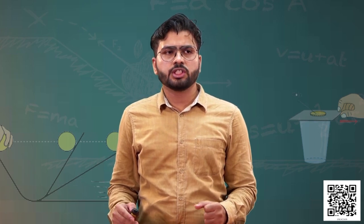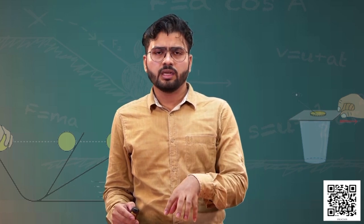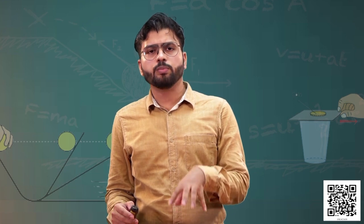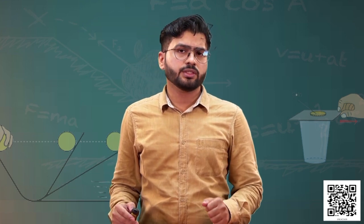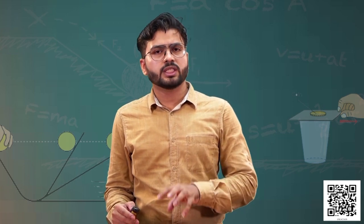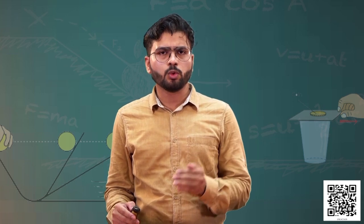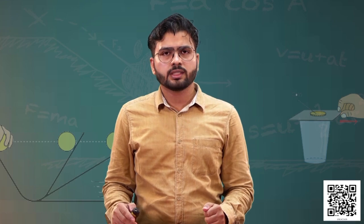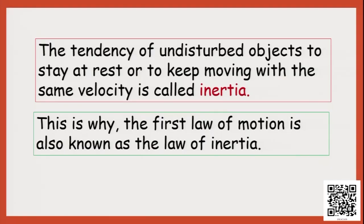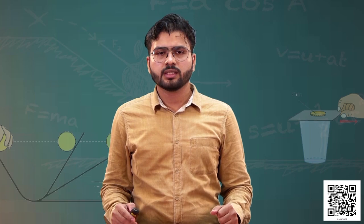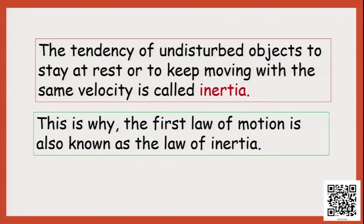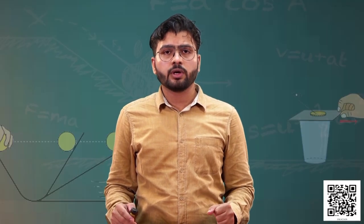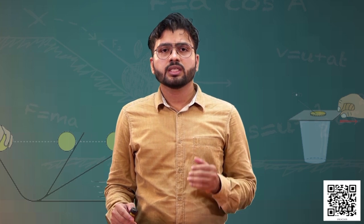The object will always try to resist the change in its state. If the object is at rest, it will try to stay at rest. If the object is in motion, it will try to resist coming to rest. This property of an object — resisting change — is also called inertia. The tendency of an undisturbed object to stay at rest or to keep moving with the same velocity is called inertia. Because of this, the first law of motion is also known as the Law of Inertia.